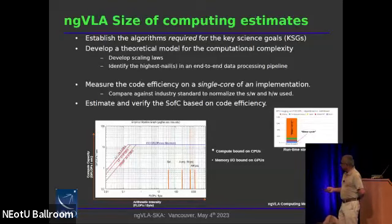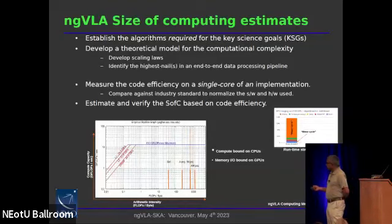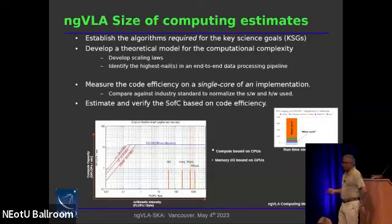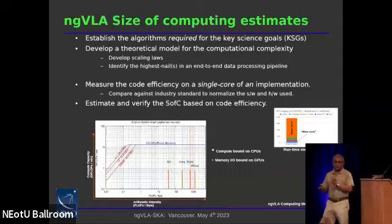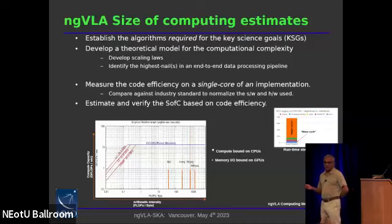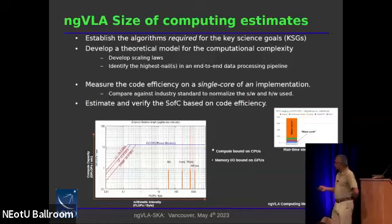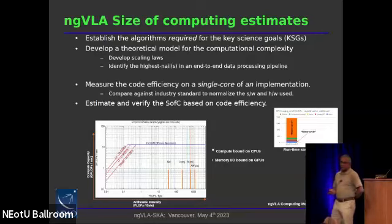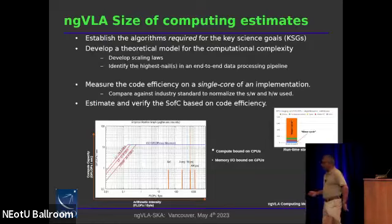The other result is to put our measurements on the roofline plot used in the HPC community, where the y-axis is the capability of the computer and the x-axis characterizes the algorithms in terms of floating point operations per byte of data loaded into memory. The slopes are the memory bandwidth at various hierarchical memories, and the blue line at the top is peak computing performance. If your algorithms are in the lower region, you scale by parallelization; if you're in the other part, parallelization will not help.